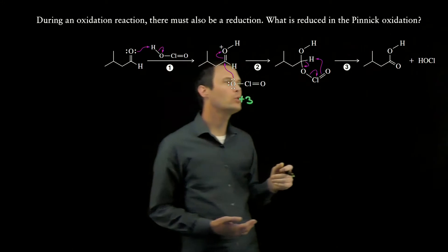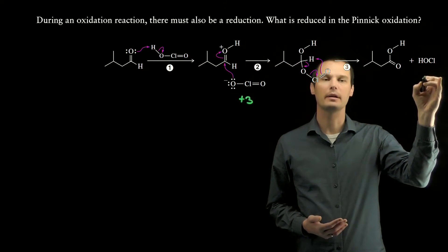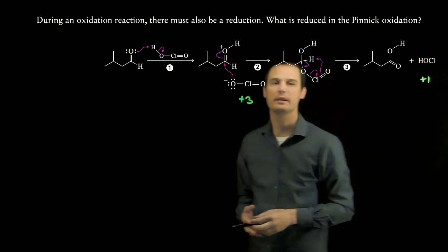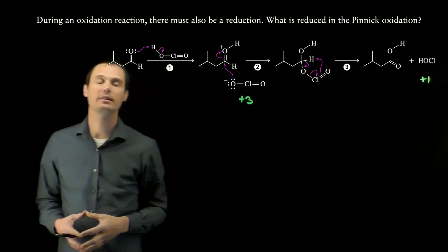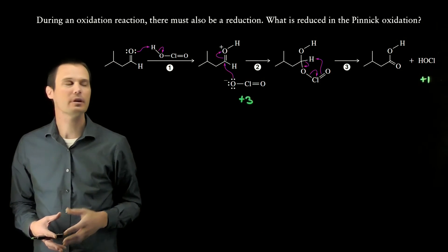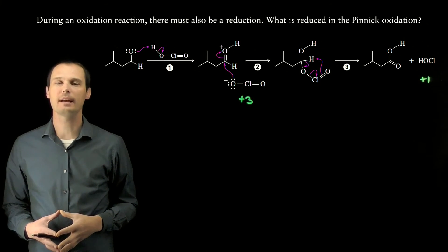If we look at the chlorine in the byproduct that is formed, the chlorine is in the +1 oxidation state. Chlorine has gained two electrons, therefore it has been reduced. Chlorine is what is reduced in the Pinnac oxidation.